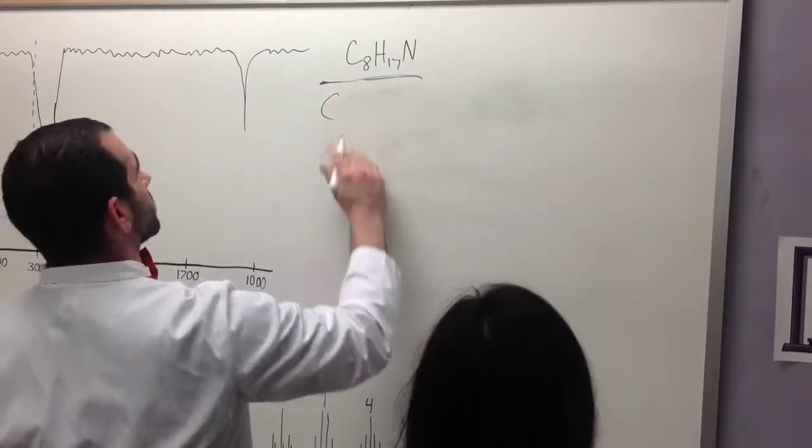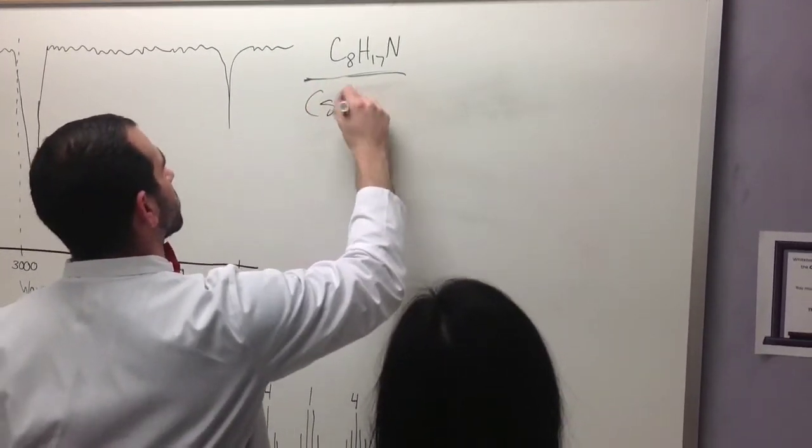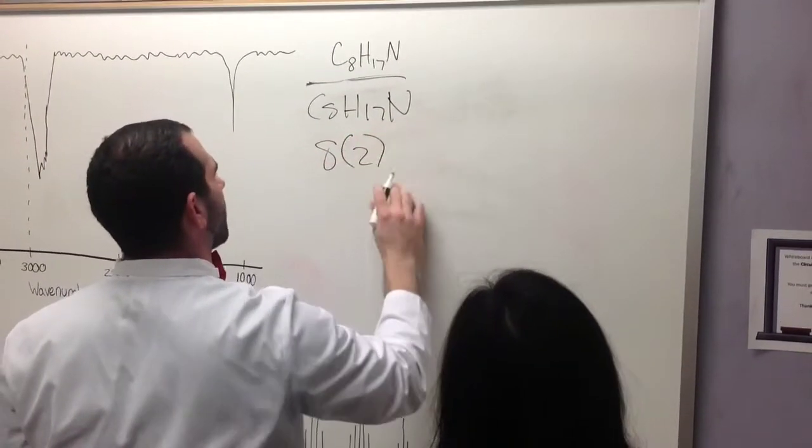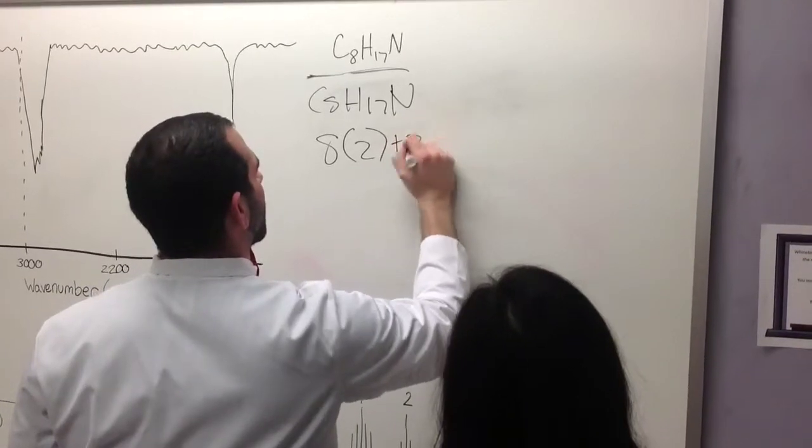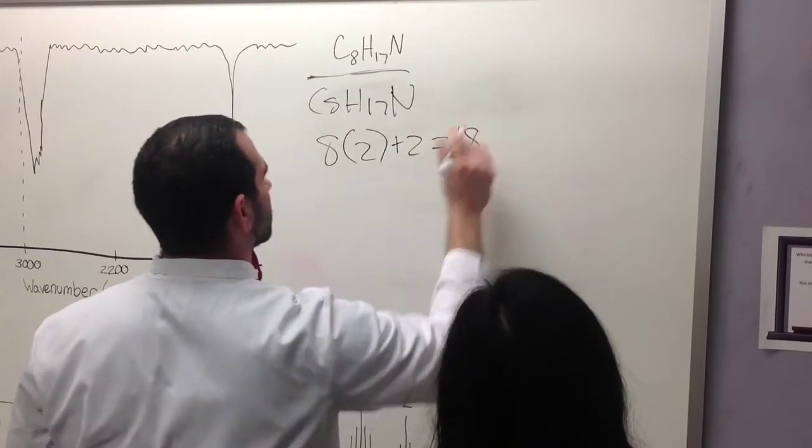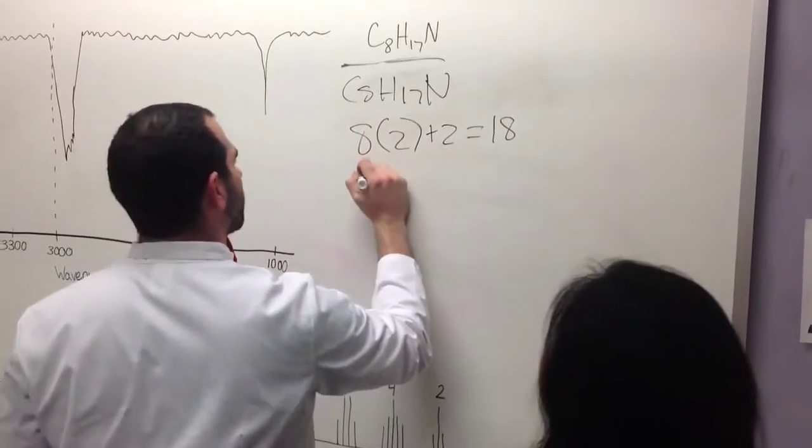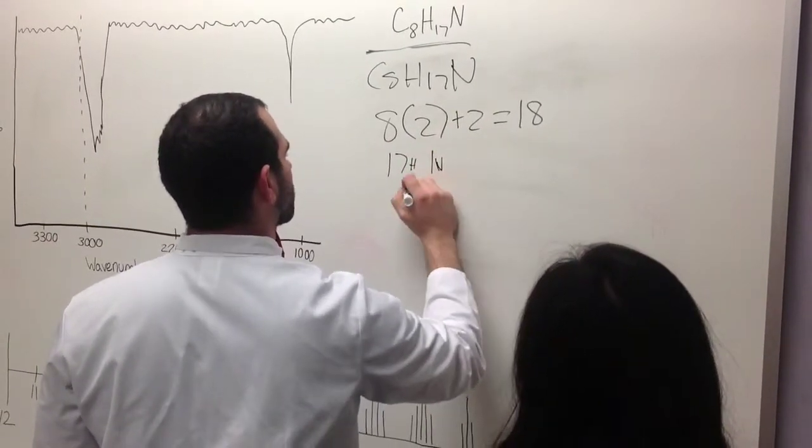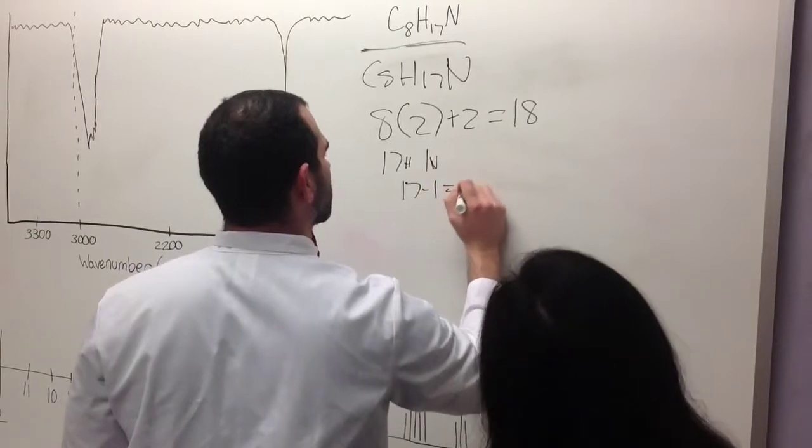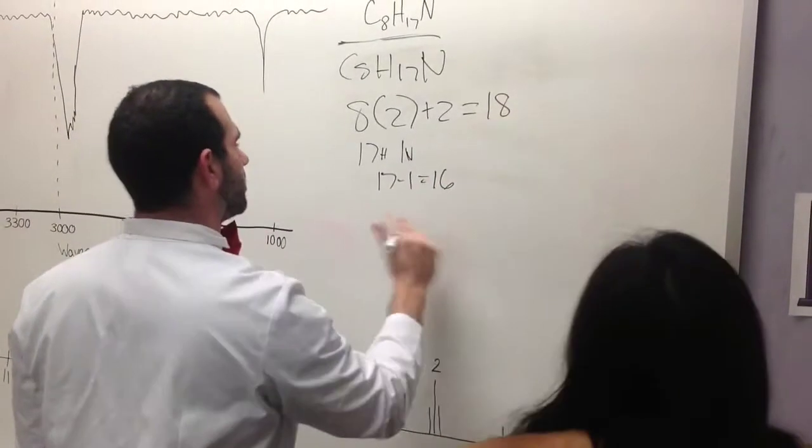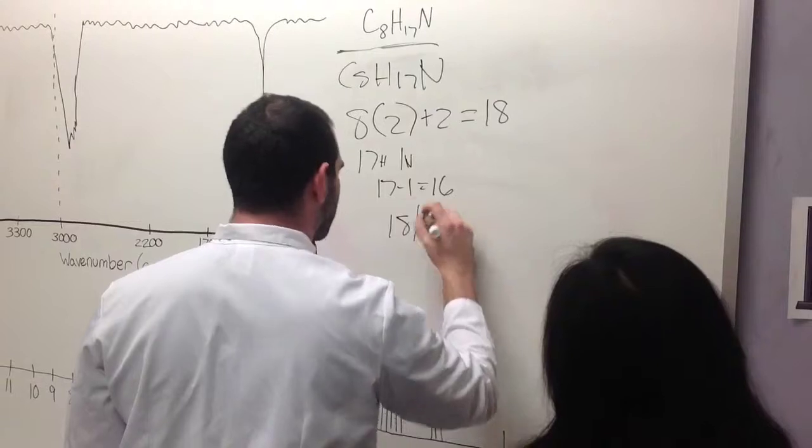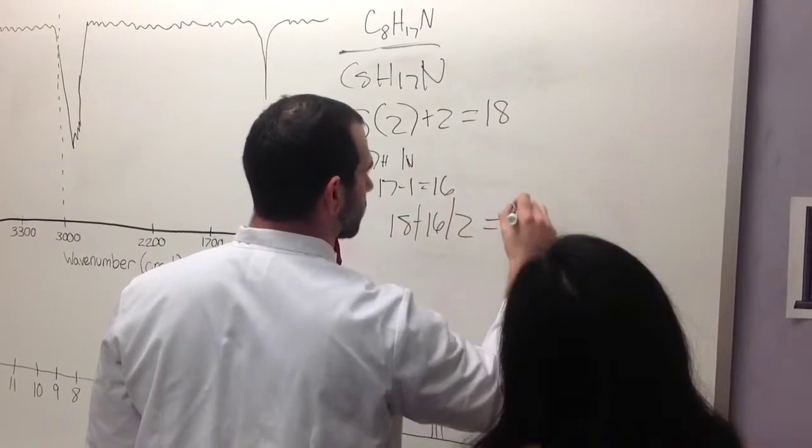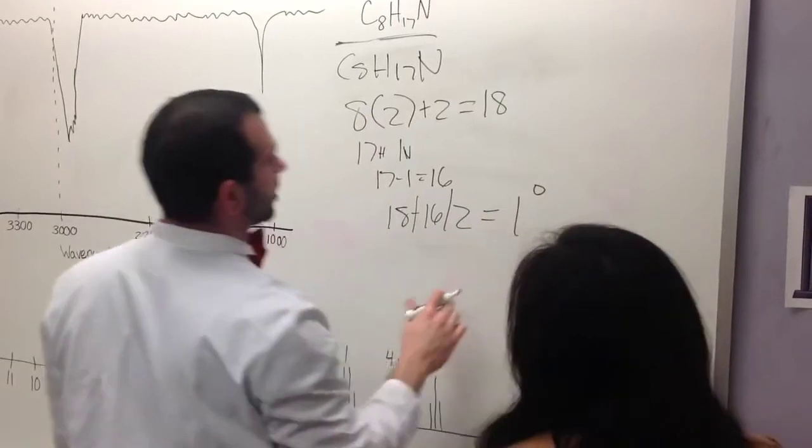So here we have our molecular formula with C8H17N. I'll just rewrite that formula. Taking 8 carbons, we're going to multiply that by 2, and then add 2, which is going to give us 18. Now we have 17 hydrogens and 1 nitrogen. We're going to subtract those to give us 16. Now taking our 18 here, and subtracting by 16, divided by 2, is going to give us 1 degree of unsaturation.